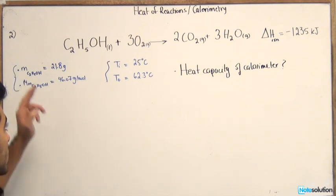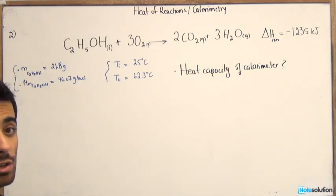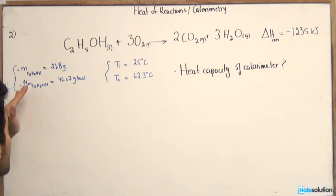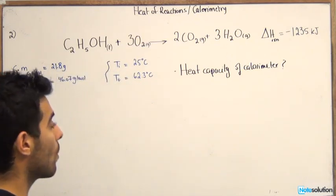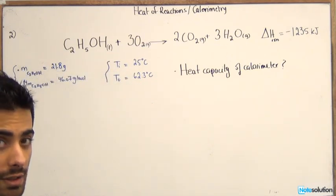We are also given the amount in grams of ethanol used in this combustion reaction as well as the molar mass of ethanol, and we are asked to find the heat capacity of the calorimeter. So how do we go about solving this problem?